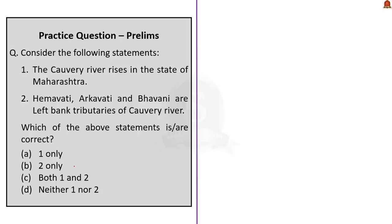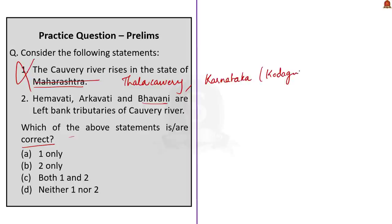Question 2 is regarding the Kaveri river. Statement 1: The Kaveri river rises in the state of Maharashtra. Statement 2: Hemavati, Arkavati and Bhavani are left bank tributaries of the Kaveri river. The Kaveri river rises at Talakaveri on the Brahmagiri range in Karnataka — so Statement 1 is incorrect. Hemavati and Arkavati are left bank tributaries, but Bhavani is not — it is a right bank tributary along with Lakshmana Tirtha, Kabini, Swarnavati, Noyal and Amaravati. Hence Statement 2 is also incorrect. The answer is Option D — neither one nor two.